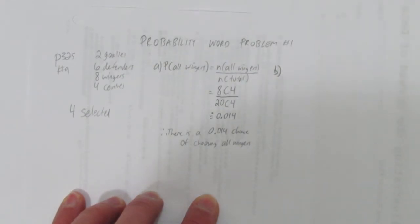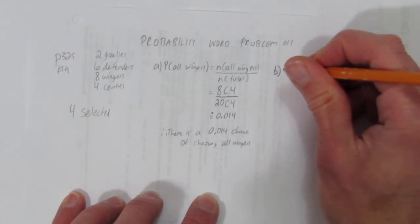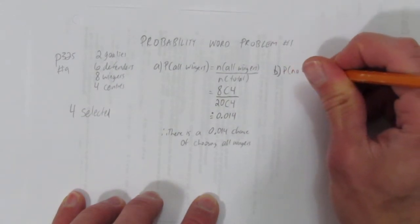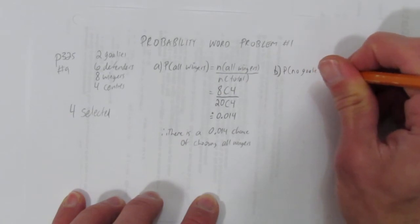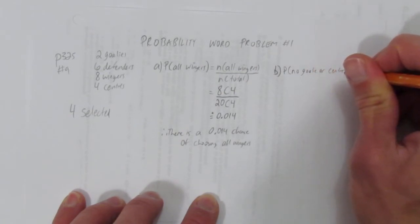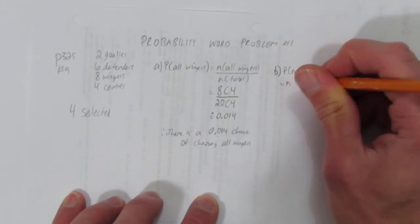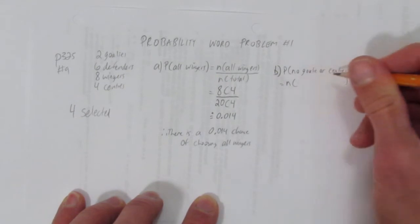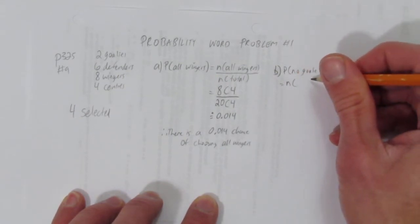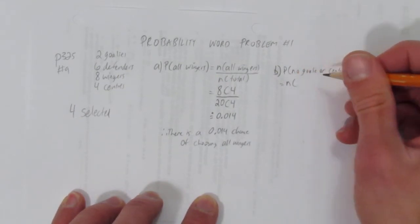And then the second part of the question says, no goalies or centers are selected. So, what's the probability of no goalies or centers? Well, that equals to the number of ways we can choose no goalies or centers. You could write down again, that's the number of ways of no goalies, no centers, if you wanted.